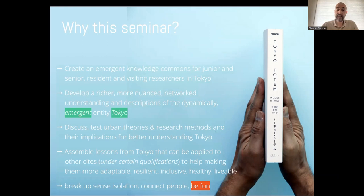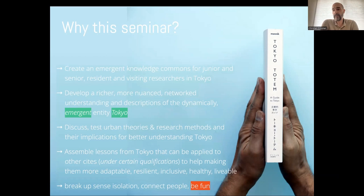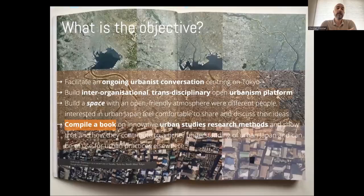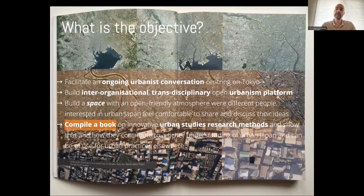Next, to assemble lessons from Tokyo that can be applied to other cities — to help making them more adaptable, resilient, inclusive, healthy and livable. And lastly, most importantly I think, from my experience as a PhD researcher, to break up the sense of isolation, to connect with other people and to have fun together. Let's make it useful, let's make it fun, let's make it pleasant. The objective is to facilitate an ongoing urbanist conversation centering on Tokyo, to build an inter-organizational transdisciplinary urbanism platform between different universities and institutions to bring us into a common space.